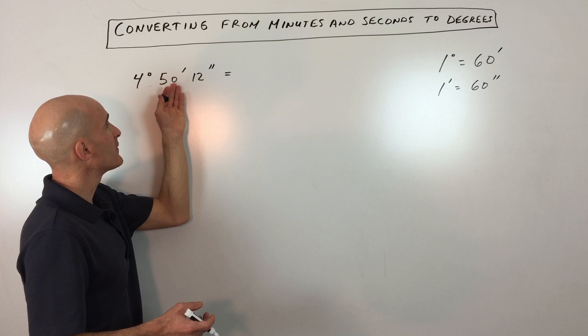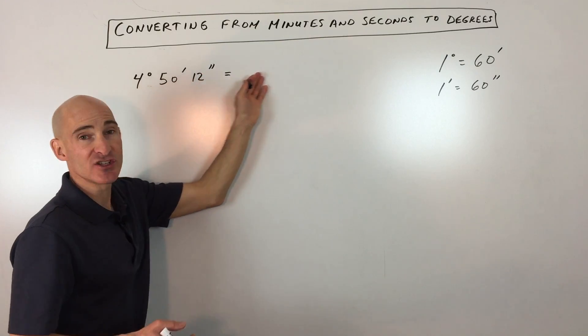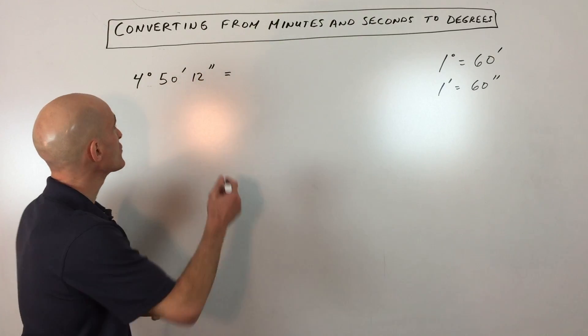So in this example, we're going to convert from 4 degrees, 50 minutes, 12 seconds, to just degrees. Okay, so here's what we're going to do.